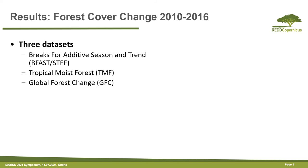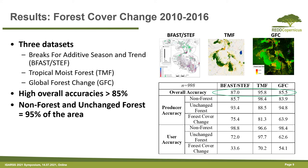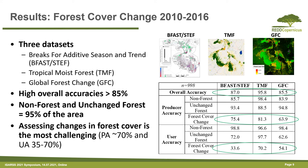When considering forest cover changes, we analyzed three different products — BFAST, TMF, and GFC — applied on the study area. Based on this accuracy assessment, we identified high overall accuracy above 85%, but this is mainly due to the majority of the area being non-forest or unchanged forest. Assessing changes in forest cover remains the most challenging, with producer accuracy around 70% and user accuracy ranging from 35% to 70%.